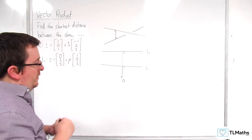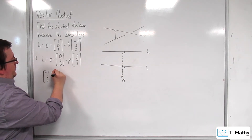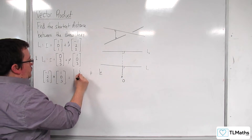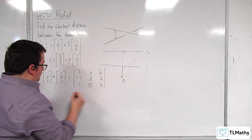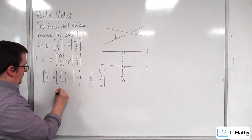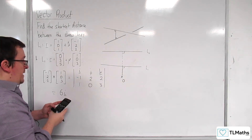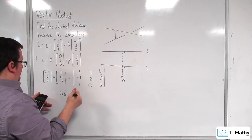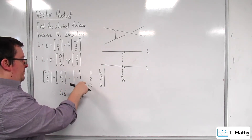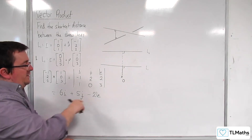If I find the vector product between those two direction vectors, that will give me the direction I need. So I'm going to work out the cross product, which is the determinant of this matrix. That gives 6i — then minus 1 times 3 take away 1 times 2 gives 5, so plus 5j — and for k we've got minus 1 times 0 take away 2, so minus 2k. That vector is perpendicular to both direction vectors.